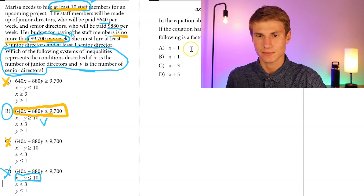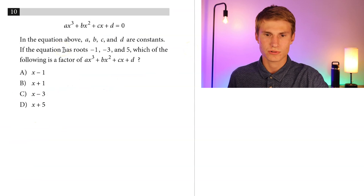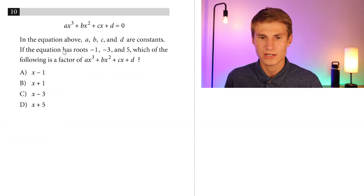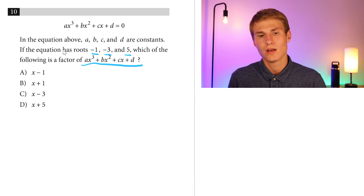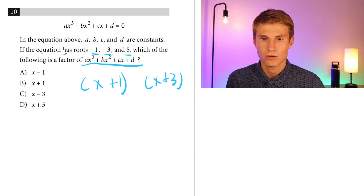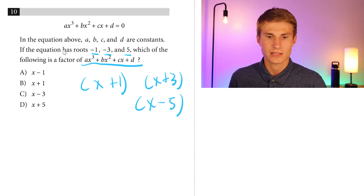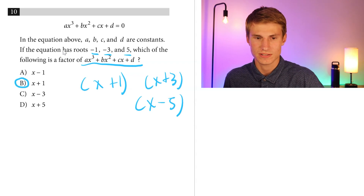Moving on to number ten: if an equation has roots negative 1, negative 3, and 5, which of the following is a factor? Factors would be X plus 1, X plus 3, and X minus 5. Looking at the answer choices, the only option that corresponds with a potential factor is answer choice B. So B is our correct answer for number 10.